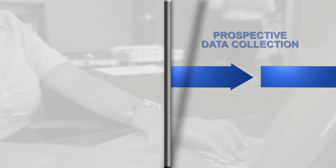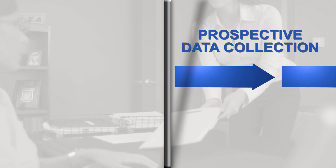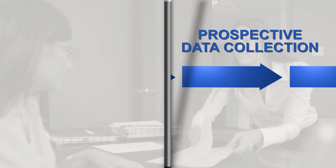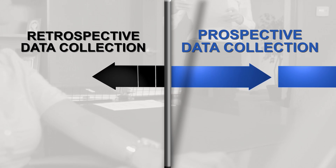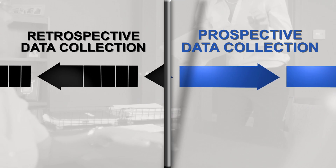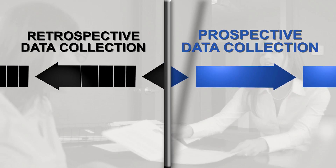Ideally, this type of information should be gathered in real time. This means having staff regularly record how they spend their time during a specific time period. While this method may be more of a burden for staff, it allows you to gather detailed data about how they spend their time. You could also gather this information retrospectively by asking staff how they spend their time over the past week or month. This method is slightly less burdensome, but generally results in a less accurate time estimate.